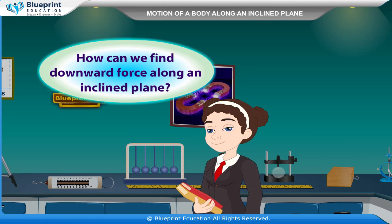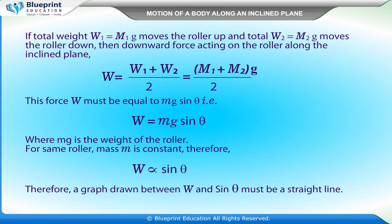How can we find downward force along an inclined plane? If total weight W1 equals M1g moves the roller up and total W2 equals M2g moves the roller down, then downward force acting on the roller along the inclined plane W equals W1 plus W2 divided by 2 equals M1 plus M2 times g divided by 2. This force W must be equal to mg sin theta, i.e. W equals mg sin theta.